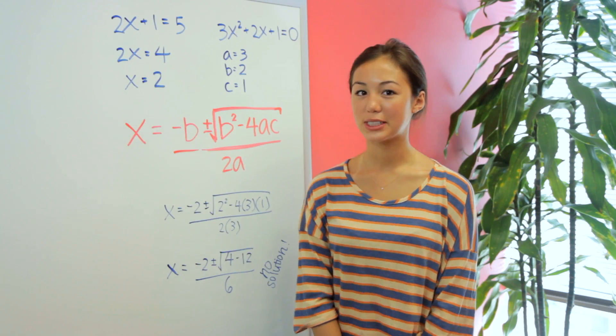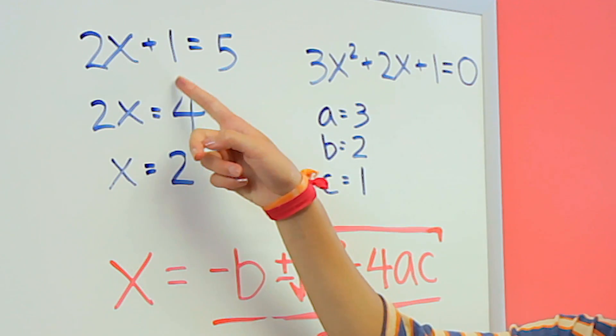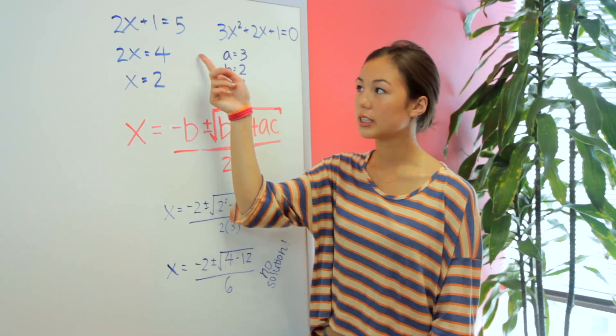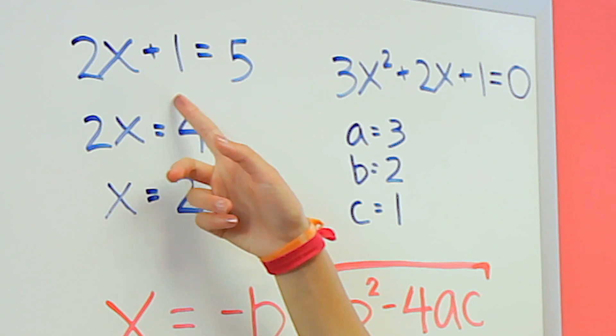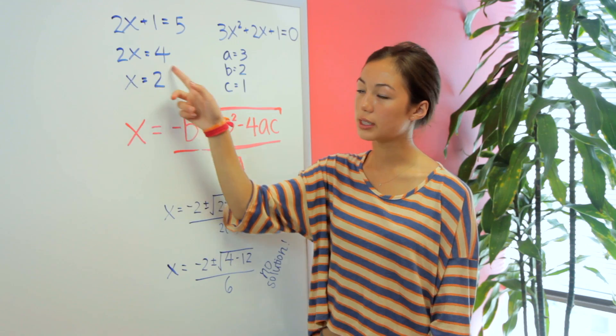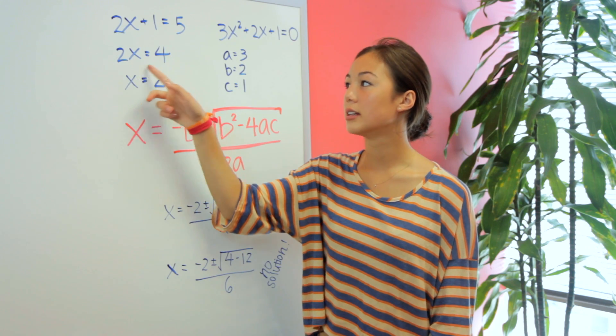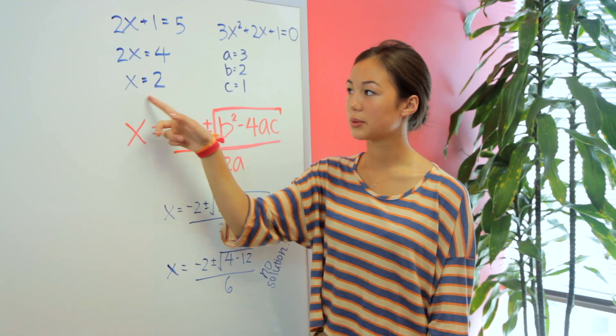Let's start with a simple linear equation. Here we have 2x plus 1 equals 5. To solve this, we're going to isolate x. We move 1 to the other side by subtracting it to get 4. 2x equals 4. Then we divide everything by 2 to isolate x, so we get x equals 2.